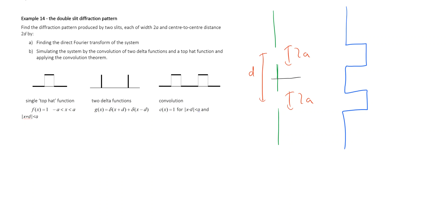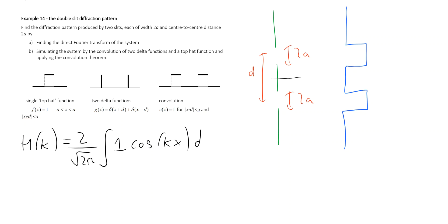We're going to call the Fourier transform h(k), because we're going to need f and g later on. Since this is an even function we can use the cosine approach: the Fourier transform is given by 2 divided by the square root of 2π, then the integral of our transmission function — which equals one where the slits are transmitting — times cos(kx) dx.